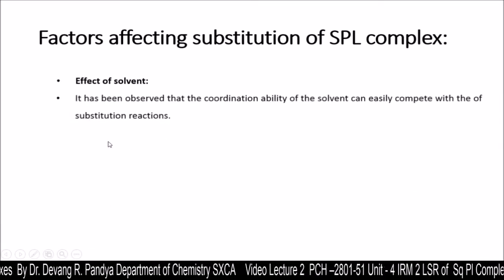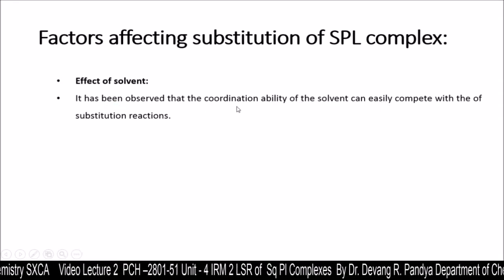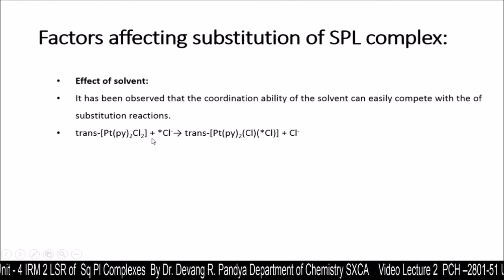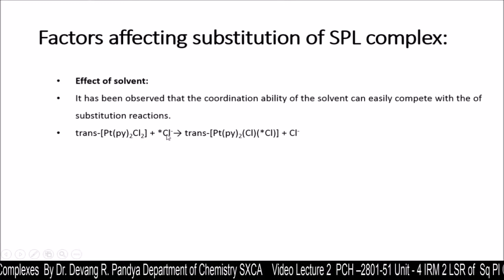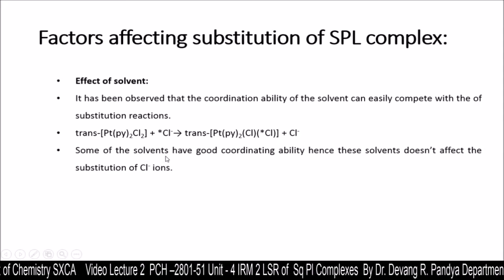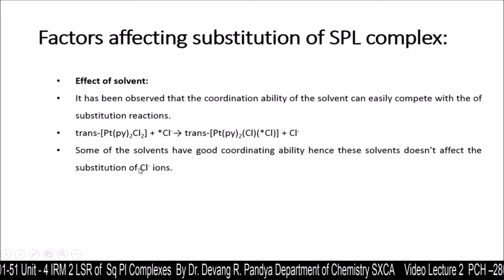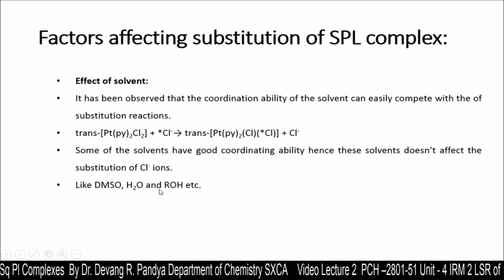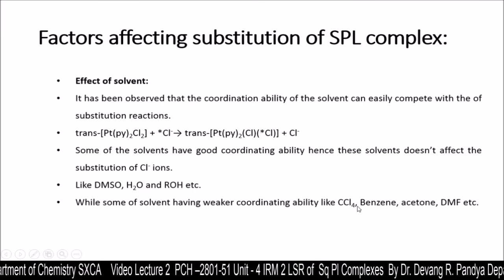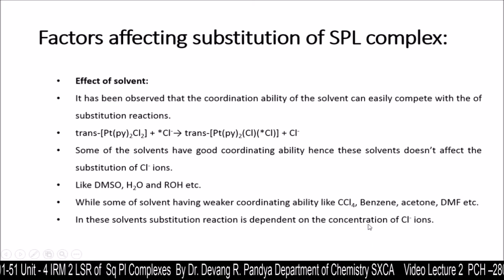The third factor is the effect of solvent. Solvent plays a crucial role in ligand substitution reaction. The coordination ability of the solvent can compete with the substitution reaction. For example, in a trans-platinum dipyridine dichloride complex where one chloride is substituted with radioactive chloride, solvents with good coordinating ability such as DMSO, H₂O, or alcohol do not affect the substitution of chloride. However, in solvents with weaker coordinating ability — like CCl₄, benzene, acetone, or DMF — the substitution reaction is dependent on the concentration of chloride.